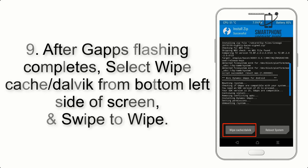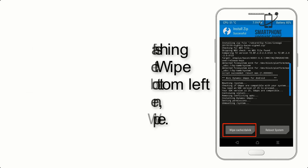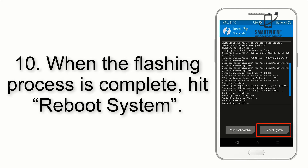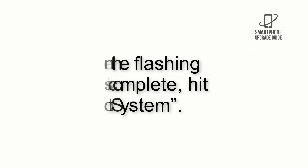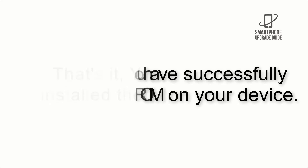Step 9: After GApps flashing completes, select Wipe Cache and Dalvik from the bottom left side of the screen and swipe to wipe. Step 10: When the flashing process is complete, hit Reboot System. That's it — you have successfully installed the ROM on your device.